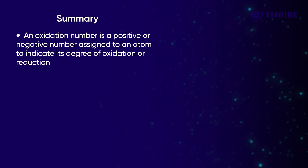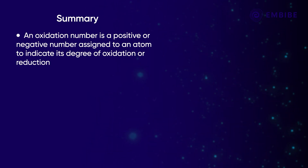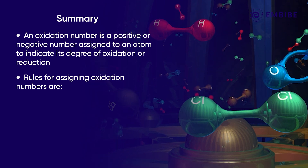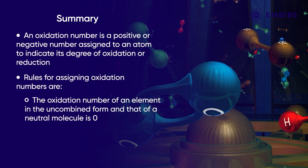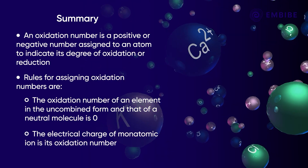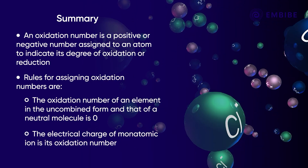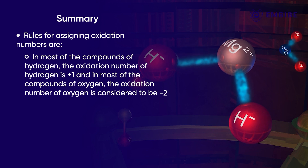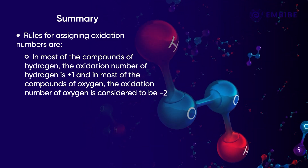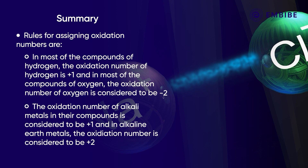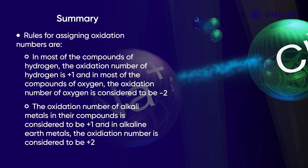Let's summarize. An oxidation number is a positive or negative number assigned to an atom to indicate its degree of oxidation or reduction. Key rules: the oxidation number of an element in uncombined form and that of a neutral molecule is zero; the electrical charge of a monoatomic ion is its oxidation number; in most compounds of hydrogen the oxidation number of hydrogen is +1; and in most compounds of oxygen the oxidation number of oxygen is −2.